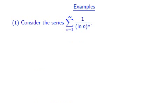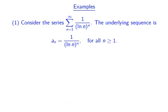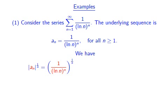Let us look at some examples. We consider the series taken over the sequence 1 over ln(n) raised to the power n, for n greater or equal to 1. We need to study what happens with the sequence |a_n|^(1/n). Since all sequence elements are positive, we don't need to worry about the absolute value in this case. We get (1/ln(n))^n all taken to the power 1/n.